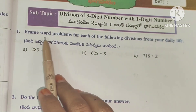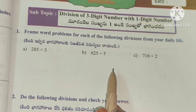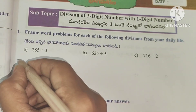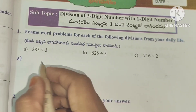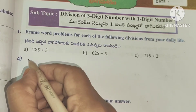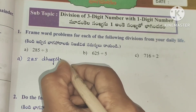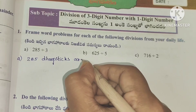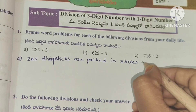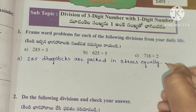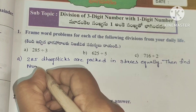Worksheet 5: frame word problems for each of the following divisions from your daily life. For 285 divided by 3: 285 doop sticks are packed in three boxes equally. Find the number of doop sticks in each box.